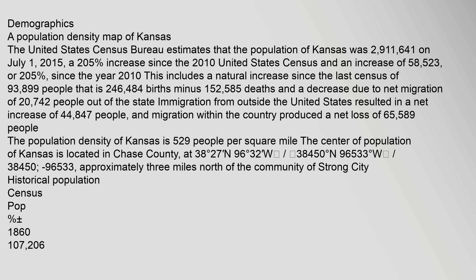The United States Census Bureau estimates that the population of Kansas was 2,911,641 on July 1, 2015, a 2.05 percent increase since the 2010 United States Census. This includes a natural increase since the last census of 93,899 people — that is, 246,484 births minus 152,585 deaths — and a decrease due to net migration of 20,742 people out of the state. Immigration from outside the United States resulted in a net increase of 44,847 people, while migration within the country produced a net loss of 65,589 people.